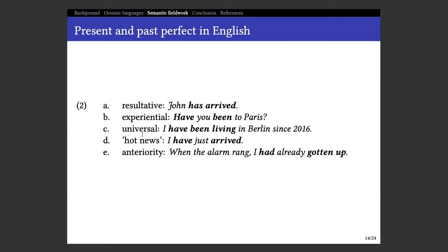Then we have universal meaning — something like 'I have been living in Berlin since 2016': it started at some point but is still going on. Then we have hot news, describing a very recent event — 'I have just arrived,' where we need 'just' to indicate this recency. And we have other types of perfect with other tenses, like past perfect, where instead of 'have' we use 'had.' This indicates anteriority — something happened before something else. Like 'when the alarm rang, I had already gotten up' — my getting up happened before the alarm, achieved by using 'had already gotten up.'